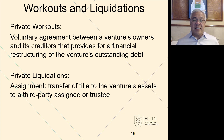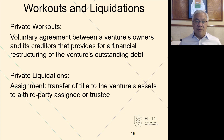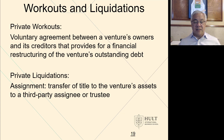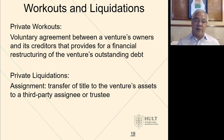In workouts and liquidations, a private workout has the owner negotiate with creditors to amicably restructure obligations. Why would a creditor restructure? Because some money is better than no money. You demonstrate your vulnerability, talk to the creditor, and offer them a choice: we can go out of business, or you give us space to right our ship and have a chance of recouping your money. In private liquidations, assets are transferred to someone else, liquidated, and the proceeds are used to pay creditors.